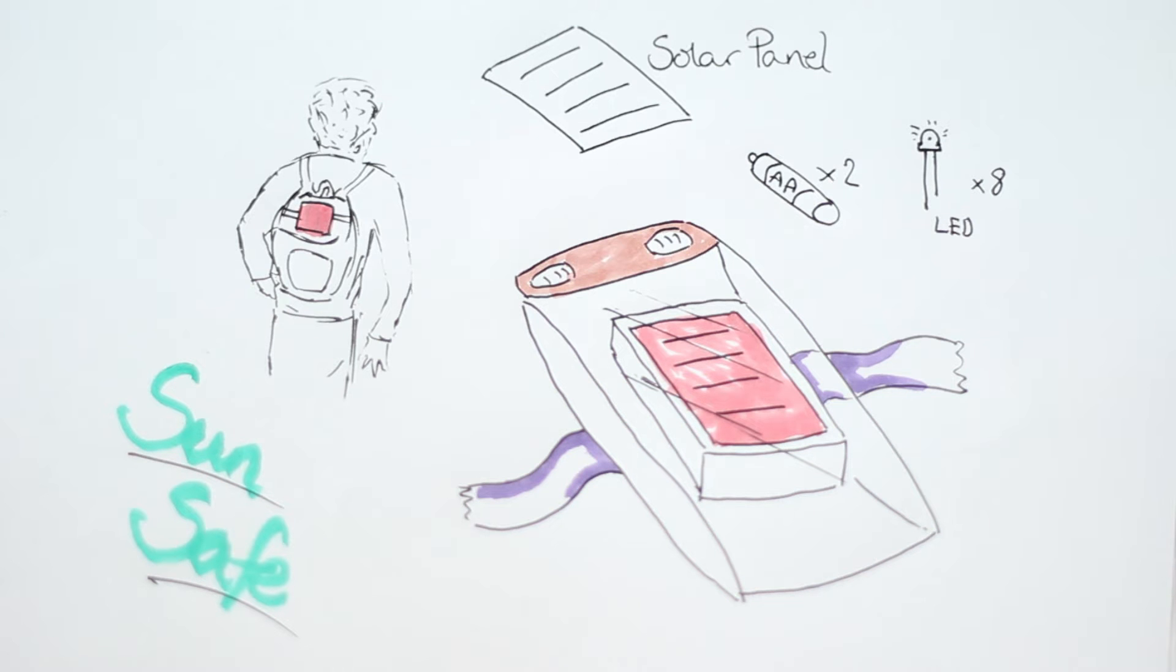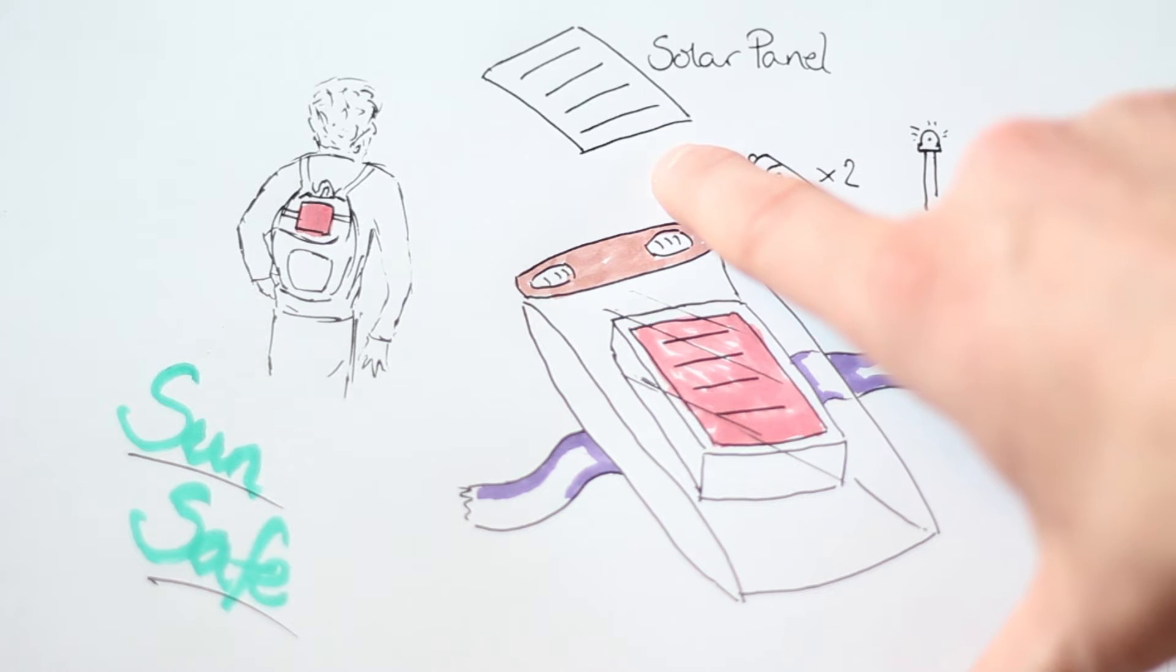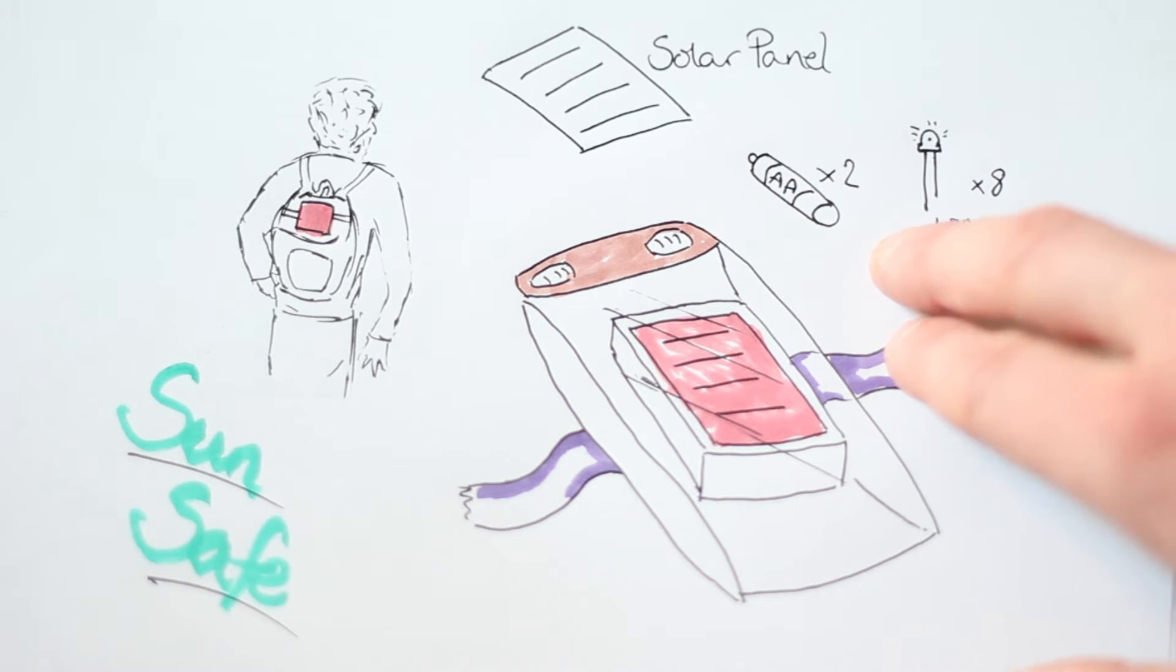I guess people do when they're cycling, but not many walkers have them. I thought maybe I could make something solar-powered, taking inspiration from those solar garden lights. If I grab a solar panel, a couple of AA batteries, some LEDs...